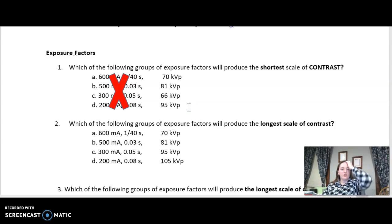And then for shortest scale of contrast, is low KVP short scale or is high KVP short scale? Well, if you said it is low KVP that gives me a short scale of contrast, you would be winner winner chicken dinner. So 66 KVP is our lowest KVP of the options. That is going to give me my shortest scale of contrast. Ignore anything that has no effect.